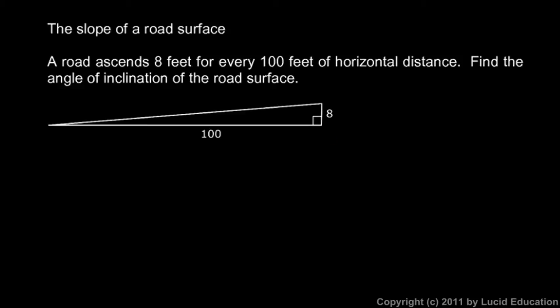And we're told to find the angle of inclination of the road surface. So that means how much the road surface here is inclined from horizontal. So that's this angle right here, this really skinny angle. We want to find that, and we'll find the answer in degrees. Well again, the tangent is always opposite over adjacent.